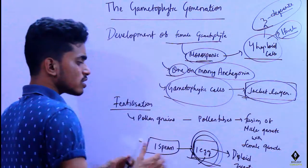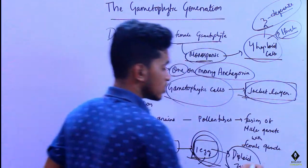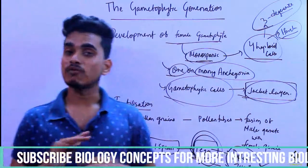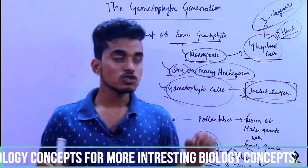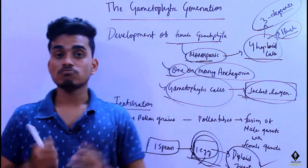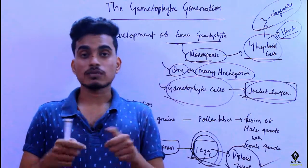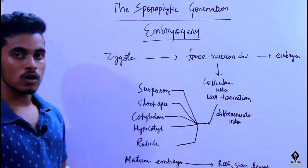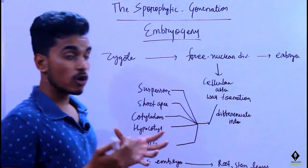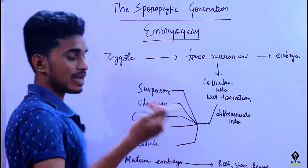Once the diploid zygote is formed, it ends the gametophytic phase. From this point the new sporophytic generation will start. Once the zygote is formed, it begins the sporophytic generation.